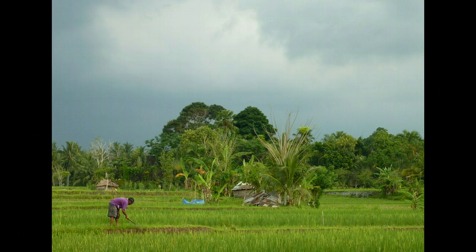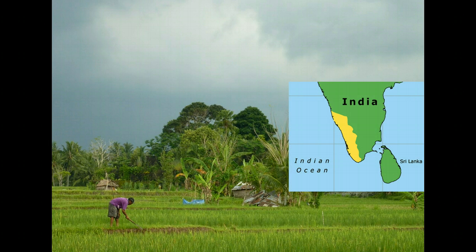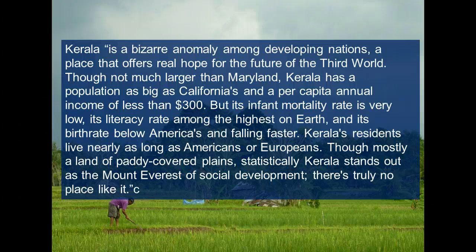Kerala is a state along the southwestern coast of India, home to an estimated 33 million people. Compared to the rest of India, Kerala is more urbanized and more densely populated. It is also relatively poor. Yet, as Bill McKibben observed, Kerala is a bizarre anomaly among developing nations, a place that offers real hope for the future of the third world.